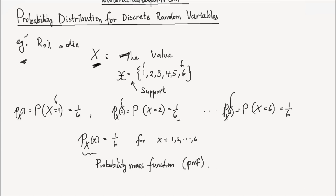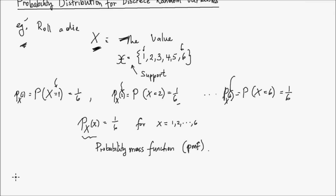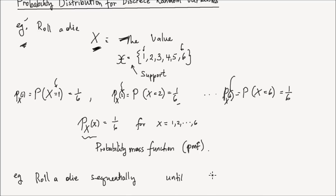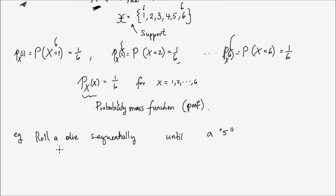Let me give you another random variable and let's find the PMF of that random variable. Again, let's roll a die, a 6-sided die, sequentially, until we observe a 5. So let's say the random variable y is the number of rolls needed to observe a 5, your first 5.